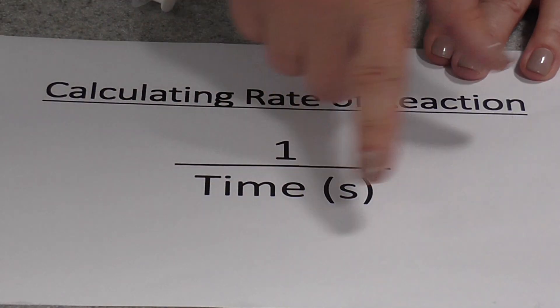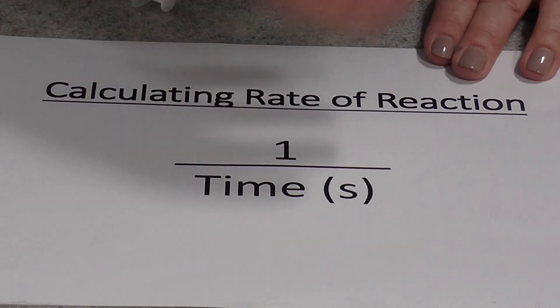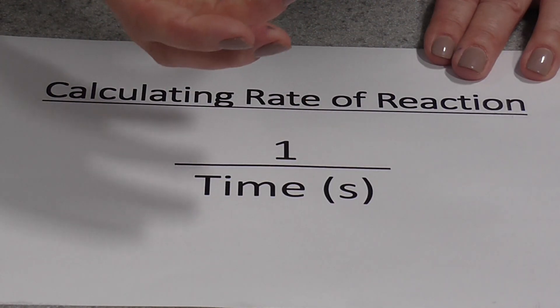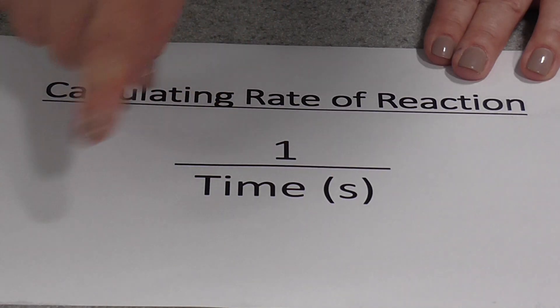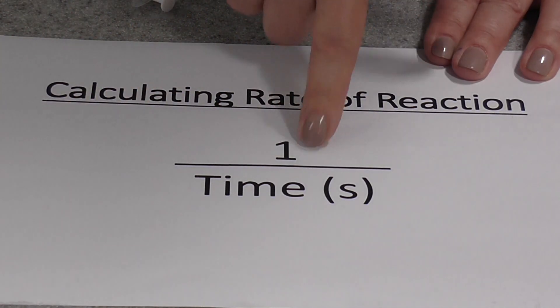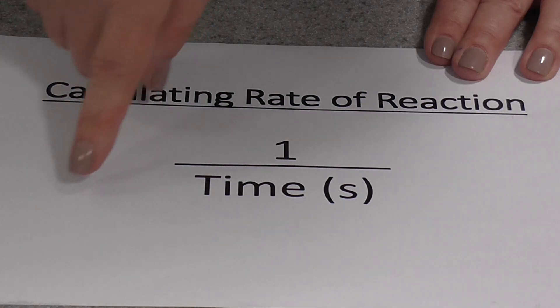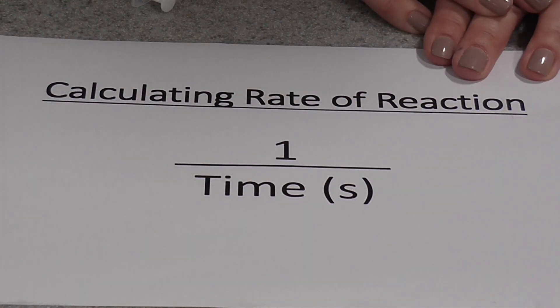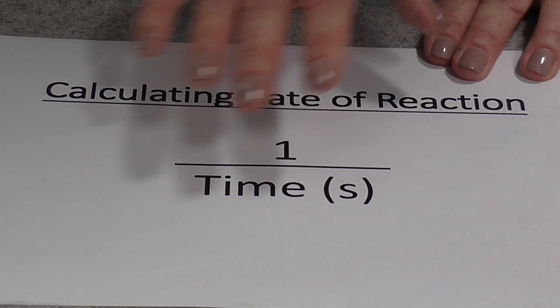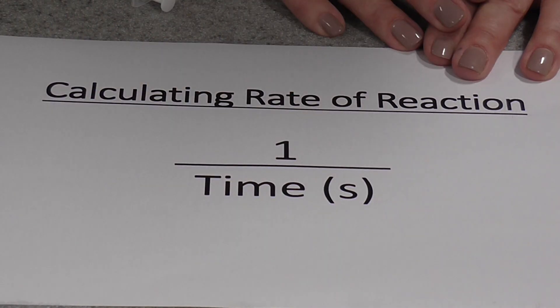Because we were timing how long it took for a complete thing, a complete reaction to take place until the X was visible, to actually work out the rate of reaction, we will just do one, that means the whole reaction, divided by the time in seconds, and that will actually give us a rate. You may find that these are best in standard form.